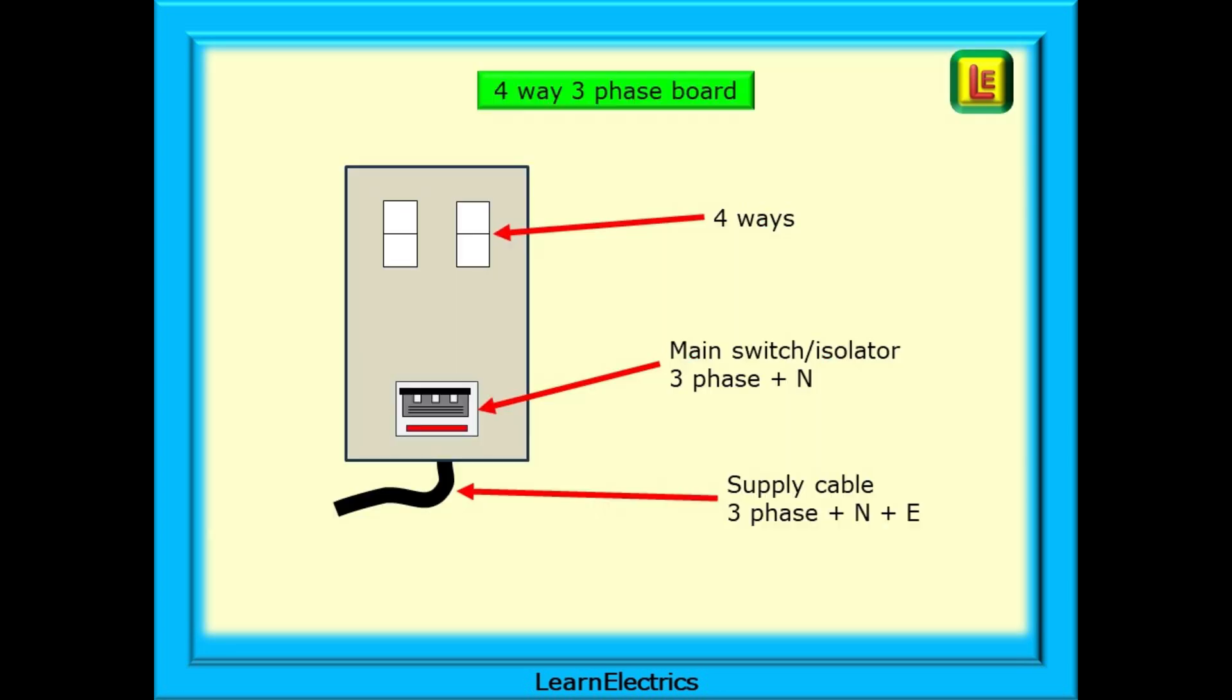We can begin with this term, ways. What are ten-way boards, four-way boards, and so on? One way, as we call it, is the space to install a three-phase breaker. So this board shown here has four ways, it will take four three-phase breakers.